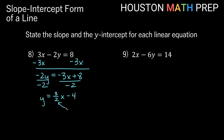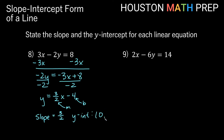So in this case, our m is 3 halves and our b is negative 4. That tells us our slope is 3 halves, and if our b is negative 4, our y-intercept is the point (0, -4).